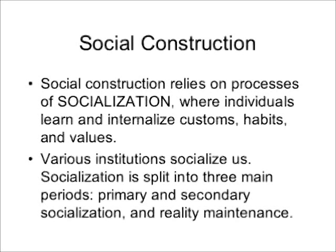Social construction relies on processes of socialization, where individuals learn and internalize customs, habits, and values. When babies are born, they're not born with an innate ability to understand the rules of a particular culture. Instead, they have to learn the rules by breaking customs and habits, then being rewarded or punished for specific behaviors. This is known as socialization. In social construction theory, socialization is split into three primary categories: primary socialization, secondary socialization, and reality maintenance.